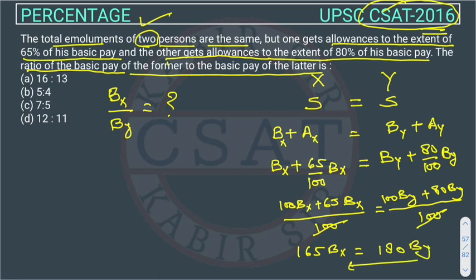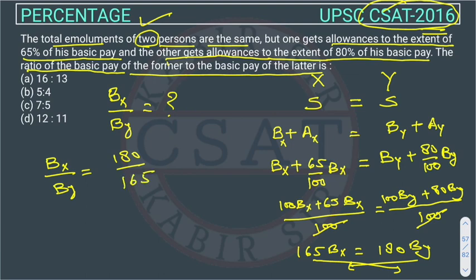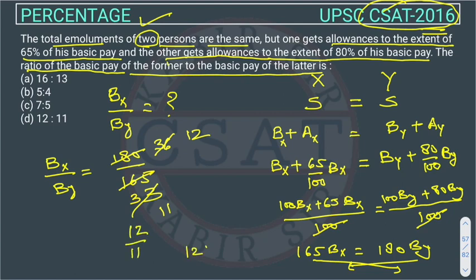Now, rearranging, By moves to one side and 165 to the other, giving us Bx over By equals 180 over 165. Dividing both by 5 gives 36 over 33, and then dividing by 3 gives us 12 over 11, or 12 is to 11.